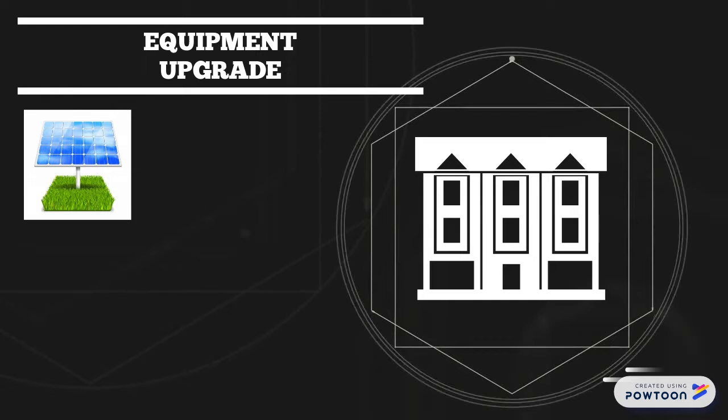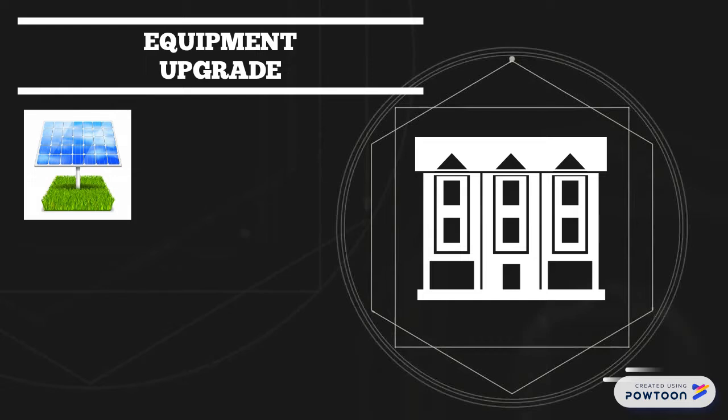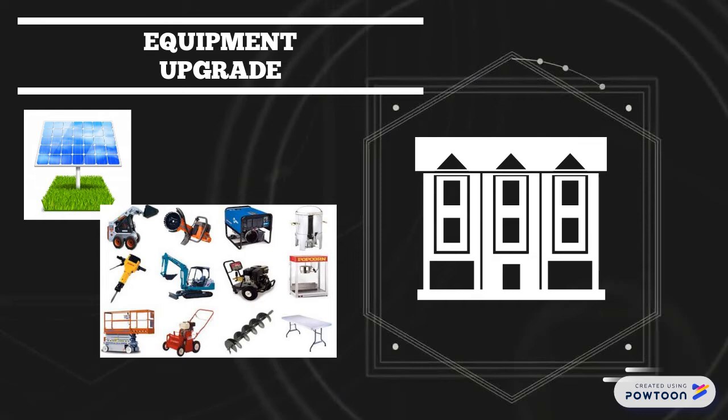Choosing solar-powered equipment instead of diesel-driven or electric-powered equipment, and using new construction equipment over outdated ones, may have a high investment cost, but it is more practical in the long run and has less environmental impact.